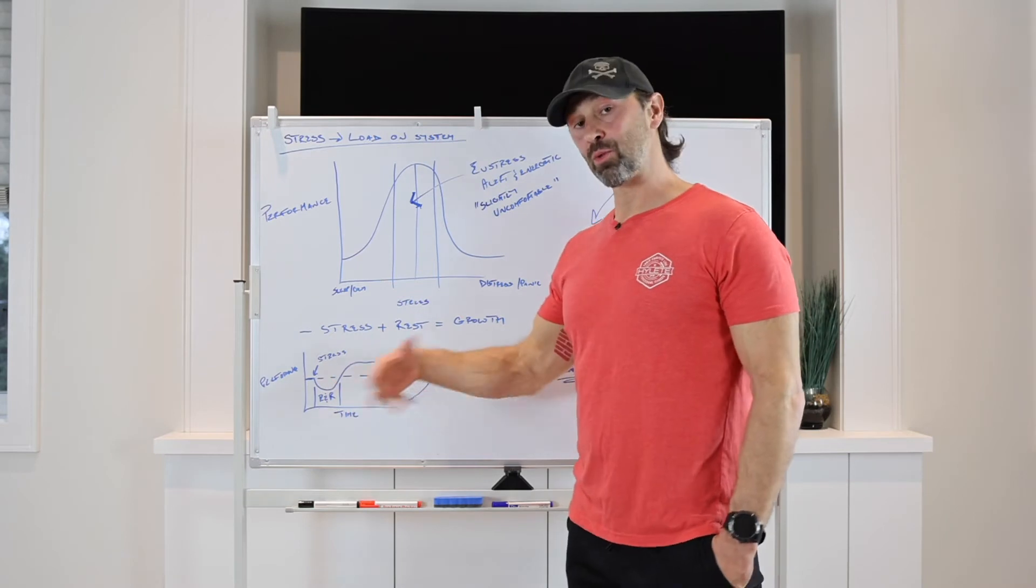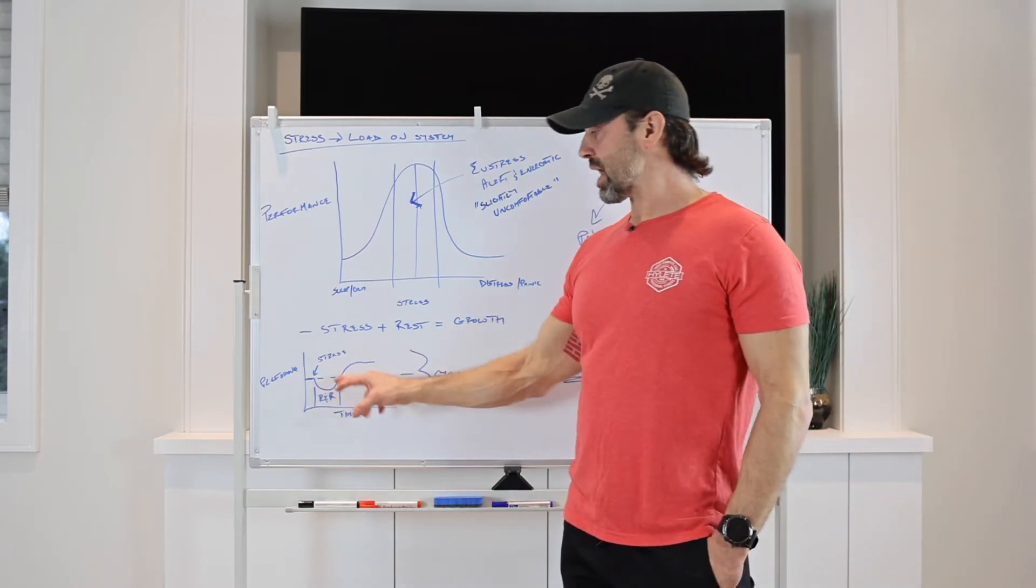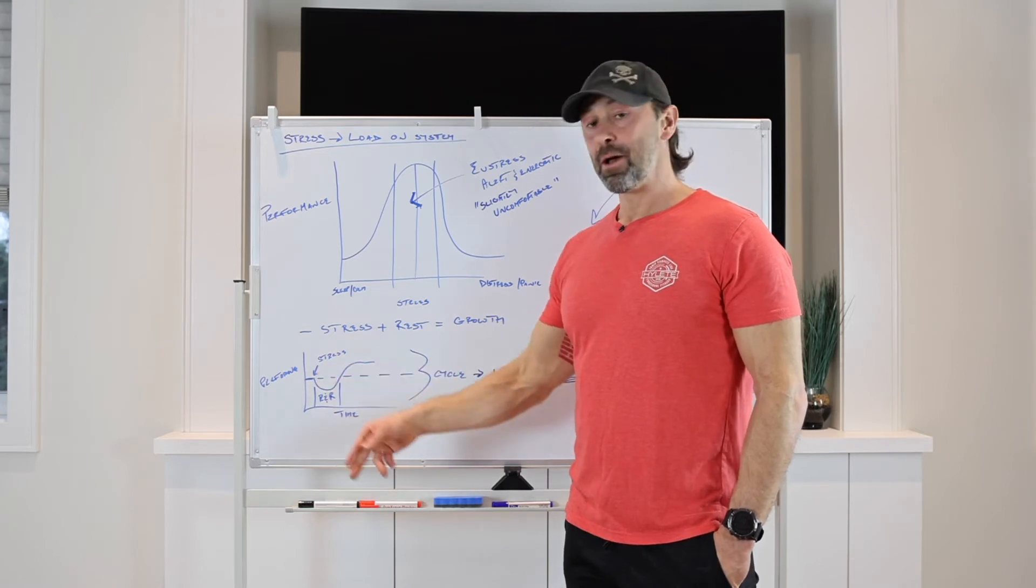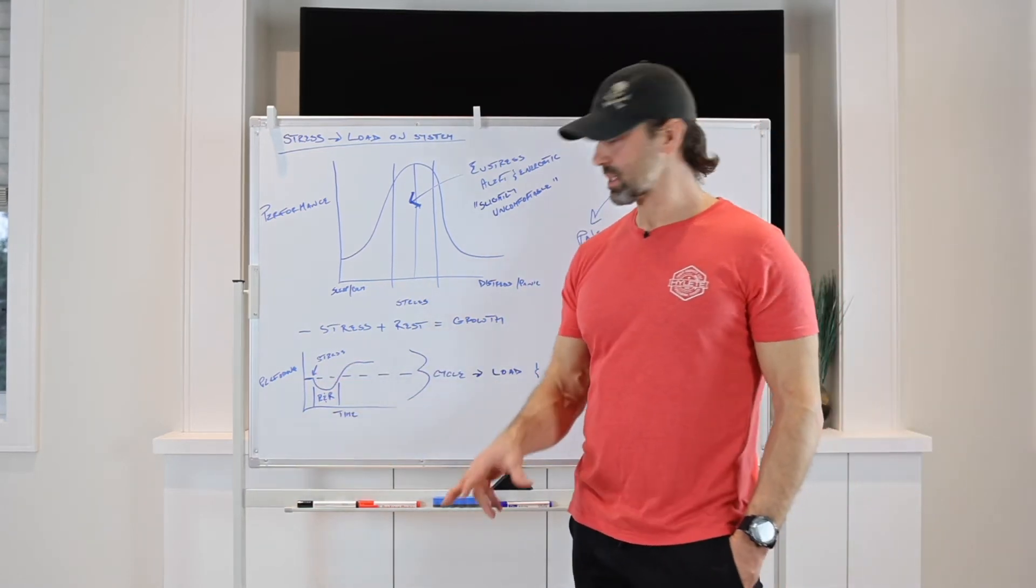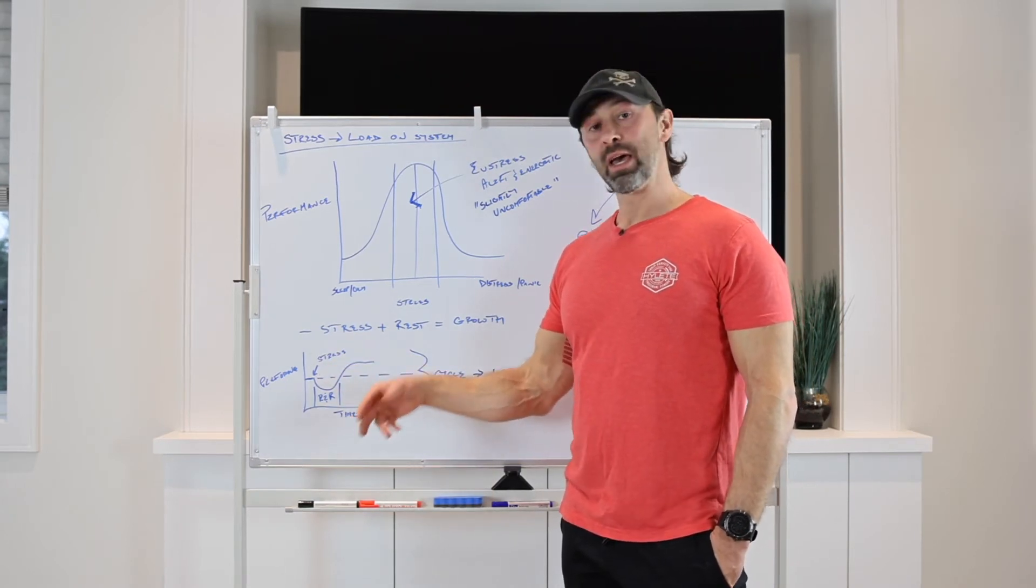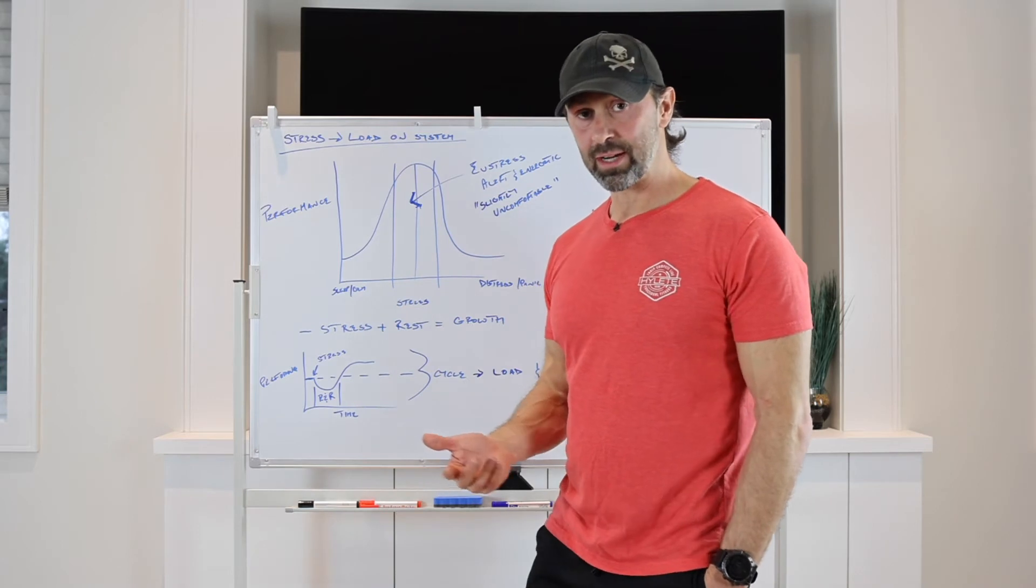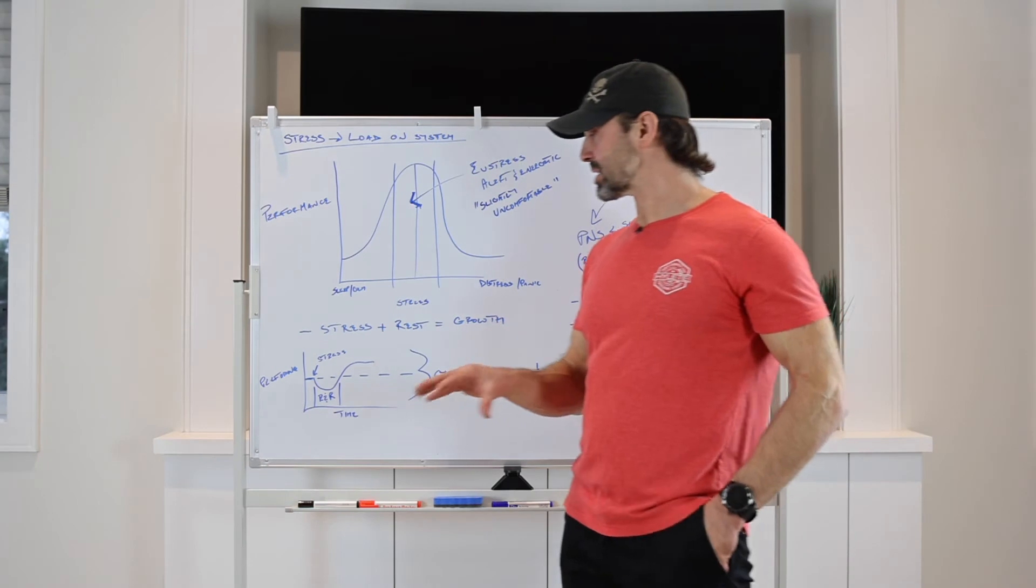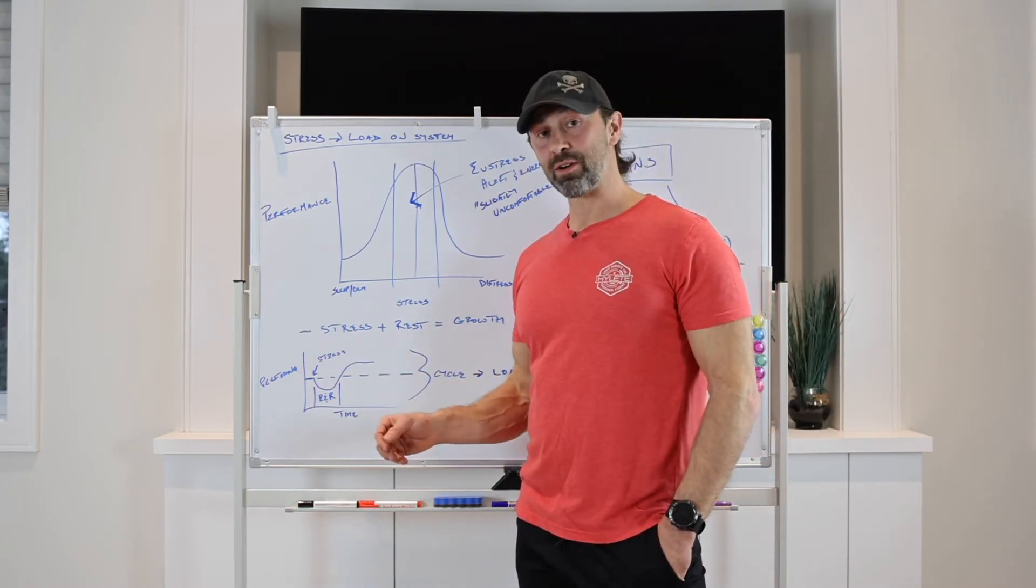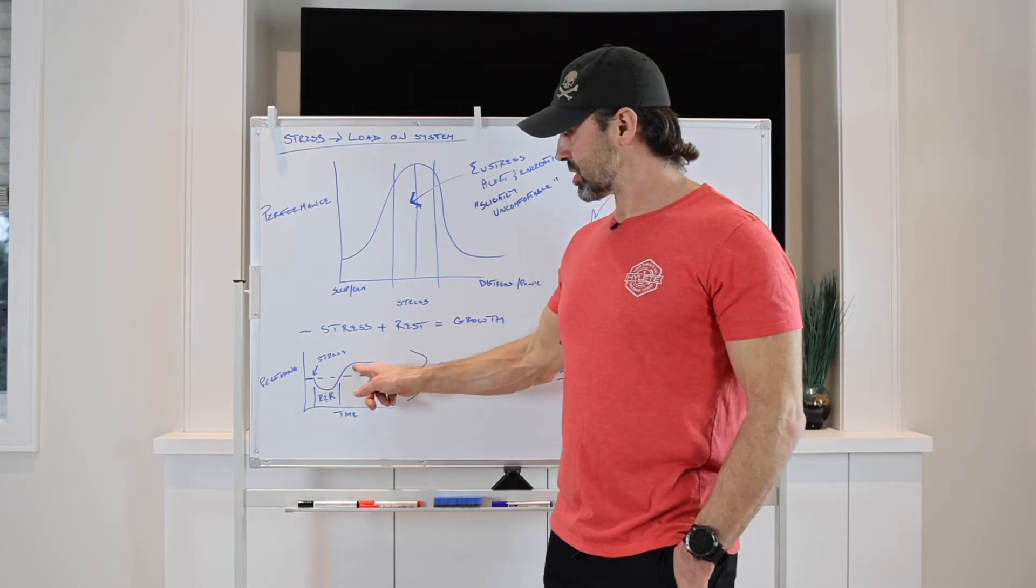So what does that look like and how do we practically take that knowledge forward? Well, whenever we have a stress placed upon our body, our performance actually dips. Let's keep this easy. Let's stick to the gym as an example. So if I enter the weight room and I do a training session, I'm going to leave that weight room weaker. I've broken down muscle tissue. I've done a whole other host of physiological things. And I'm leaving there weaker than I was when I entered. But when I come back the next time, I'm actually a little bit stronger.